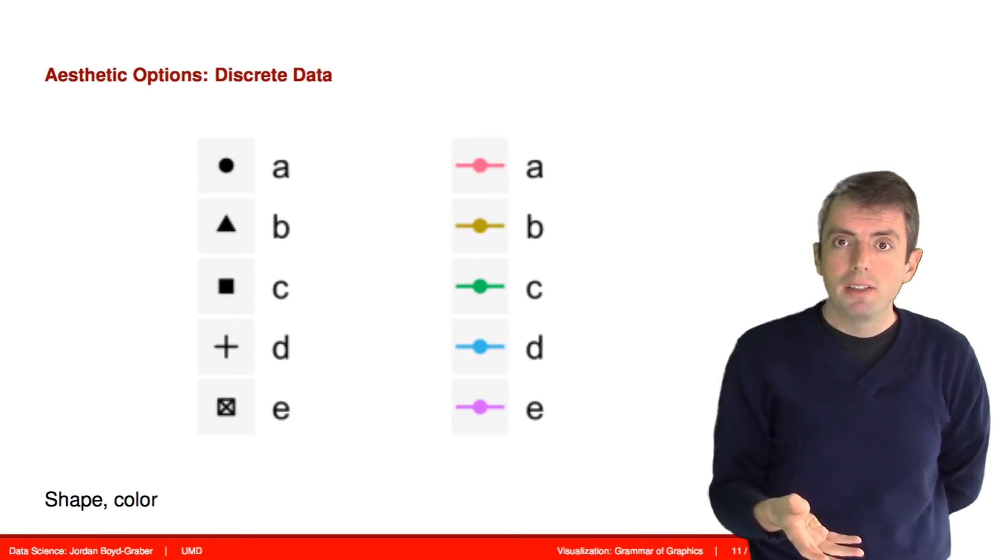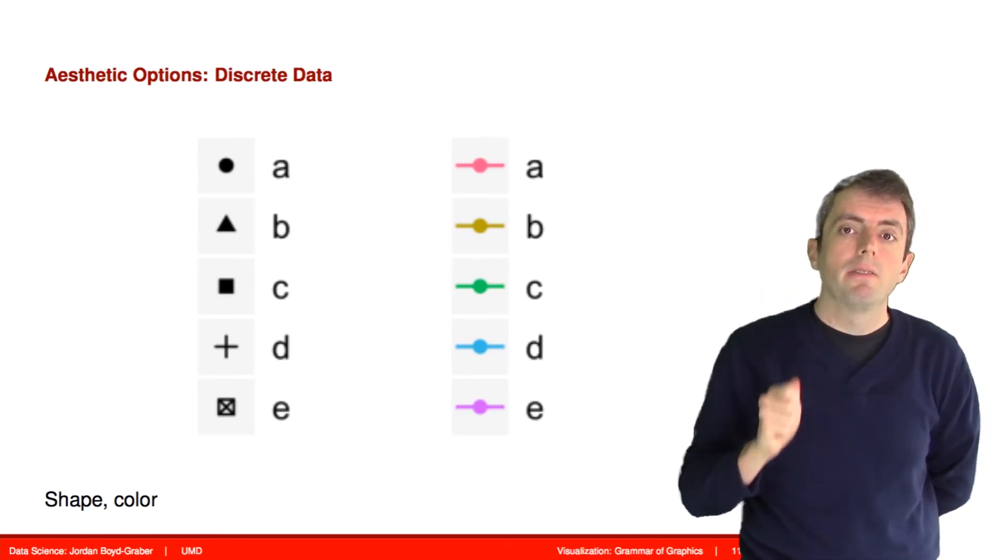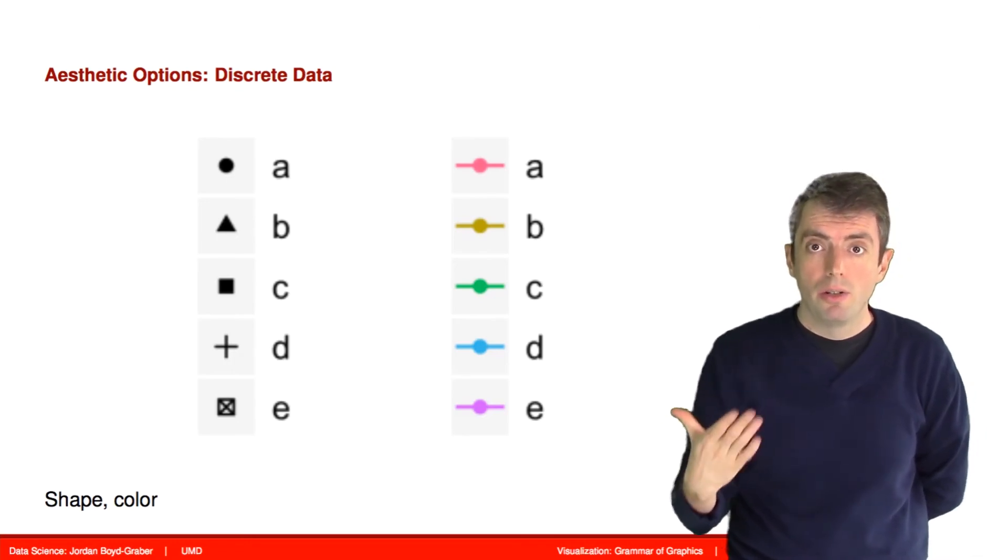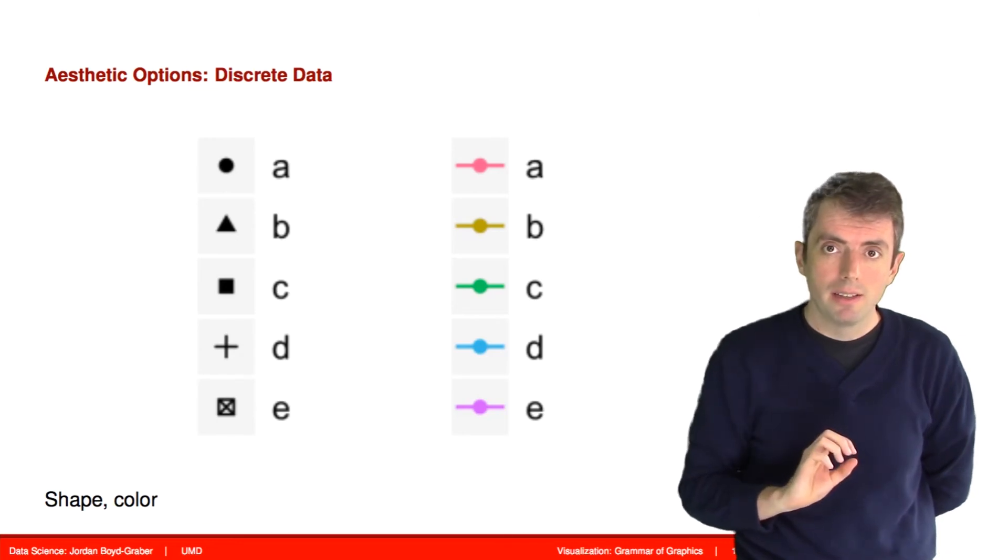Instead of using a spectrum, it now uses as different colors as possible to show you the distinctions between these different categories.